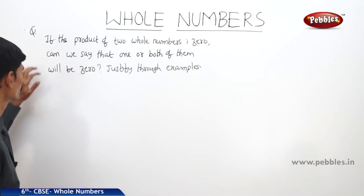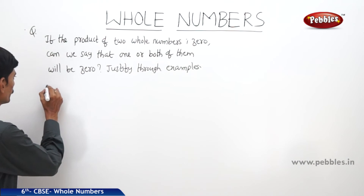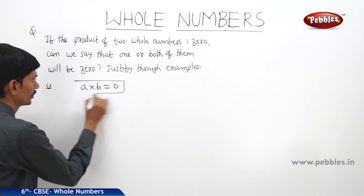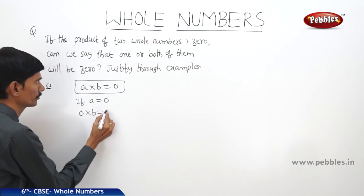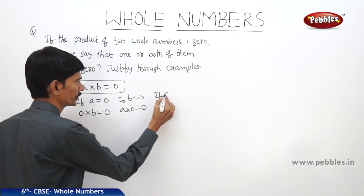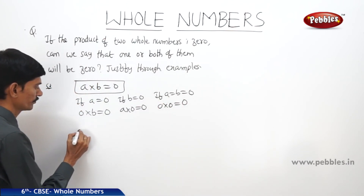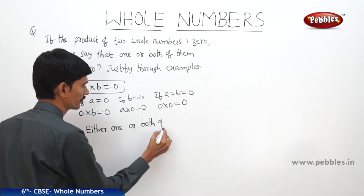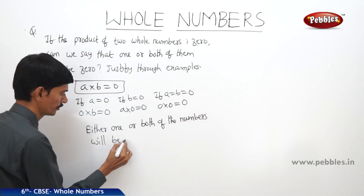If the product of two whole numbers is zero, can we say that one or both of them will be zero? If a into b equals zero, then either a must be zero, or b must be zero, or both zero. If a equals zero, then zero into b equals zero. If b equals zero, then a into zero equals zero. If both a and b equal zero, then zero into zero equals zero. So either one or both of the numbers will be zero.